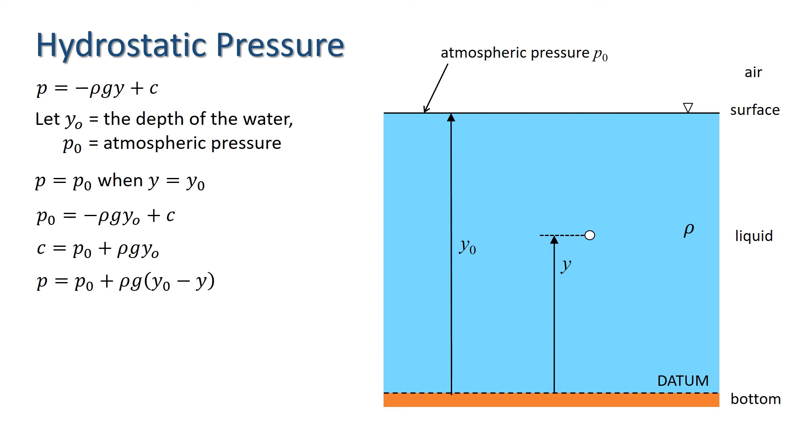If we consider an arbitrary point a distance y above the datum, then Y nought minus y is the distance of that point from the fluid surface. If we denote that distance h, then our equation can be written P equals P nought plus rho G h, or simply P equals rho G h above atmospheric pressure.